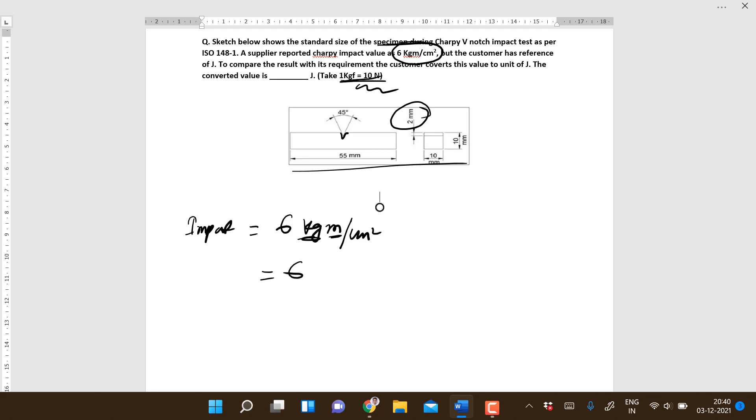And this is 1 meter, so divided by cm square. That means we can write it as 60 Joule per cm square.